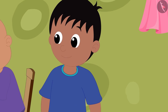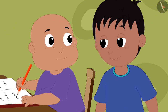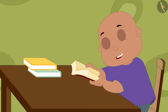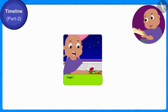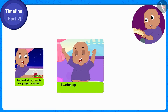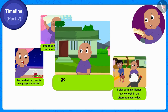Raju got excited and asked Babalu to read what he has written in his diary. Babalu started reading: I eat food with my parents every night at 9 o'clock. I wake up at 8 o'clock in the morning every day. I play with my friends at 4 o'clock in the afternoon every day. I go to school at 9 o'clock in the morning every day.